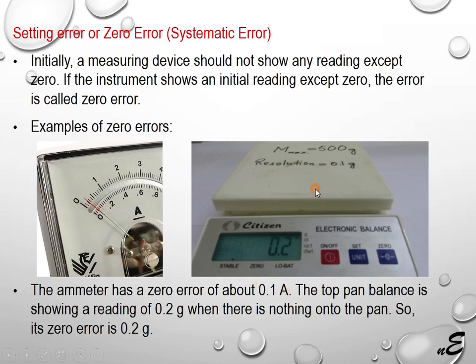There is a top pan balance with nothing on the pan, so its reading should be zero. But it is showing a reading of 0.2 gram. This is a setting error, which is called systematic error.